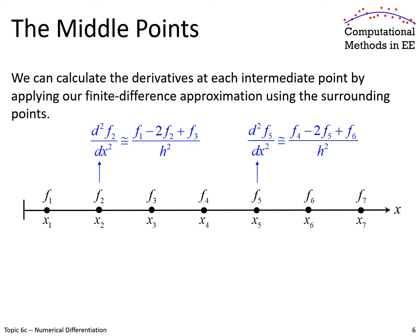As a short example, let's look at point X2. We write our finite difference approximation at the second point, and we'll see that it involves the function at point 1, point 2, and point 3 — all of the function values surrounding F2. Recall from last lecture, we evaluate this finite difference at the position of X2. Similarly, to estimate the second-order derivative at F5, we access F4, F5, and F6 — the same finite difference equation, just shifted. We could write a similar equation for every point on the grid.